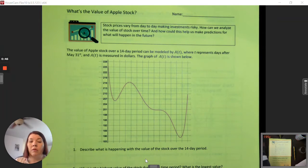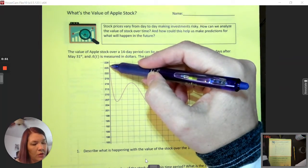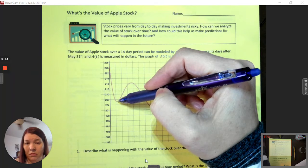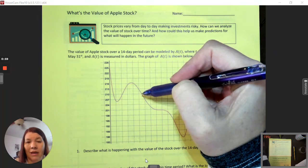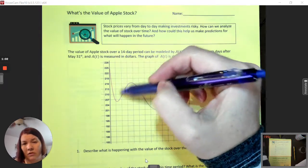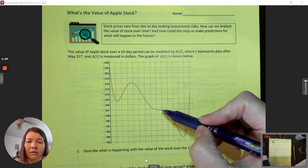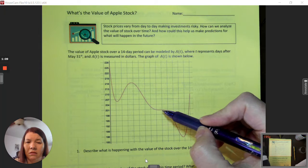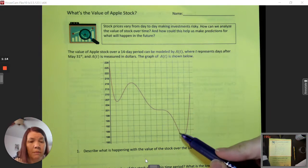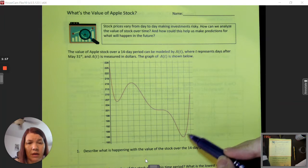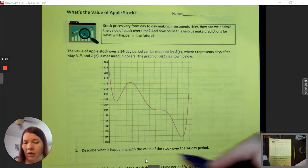Describe what's happening with the value of the stock over the 14-day period. So as we look at this picture, it starts out high, goes down to some number, then turns around and starts rising again, then has a fairly rapid decline, seems to kind of hold steady for a little while about a day, then drops again quite drastically and rapidly, then reaches its lowest point and starts to increase extremely rapidly.